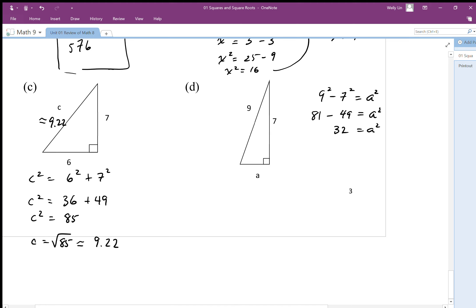So 81 minus 49 is 32, and then if I want to find out the length of a, so there's 32 squares in here, if I want to find out the length of side a, I square root. So again, area to side length is square root. And that is approximately equal to 5.656, so I'm going to round that to 5.66.